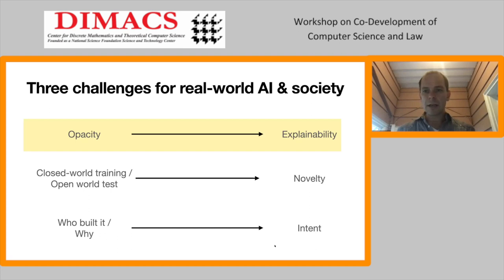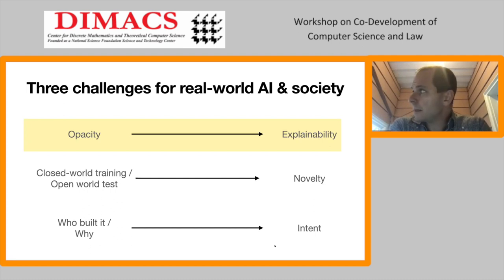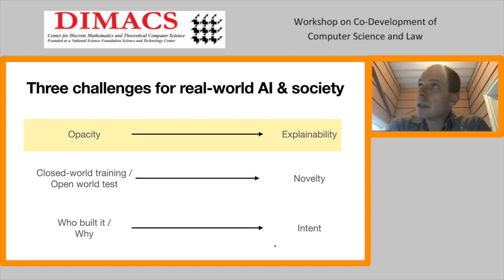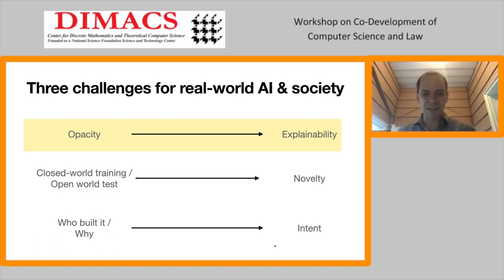I'm going to talk about these three challenges — explainability, novelty, and intent — in the context of existing machine learning and AI tools. Most of the talk is going to be relatively informal. I'll highlight a little bit of the math and technical background but probably not go into much detail. I'll refer you to papers where you can get all the technical details.